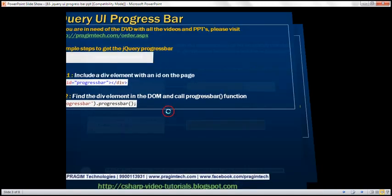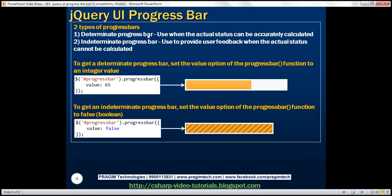There are two types of progress bars in jQuery: the determinate progress bar and the indeterminate progress bar. Use the determinate progress bar when the actual status can be accurately calculated. Use the indeterminate progress bar to provide user feedback when the actual status cannot be calculated. To get a determinate progress bar, all you need to do is set the value option of the progressbar function to an integer value between 0 and its maximum value. At the moment, we have set it to 65.